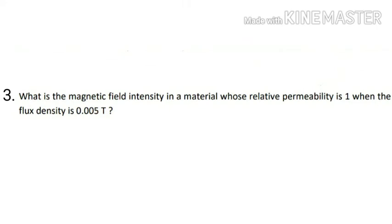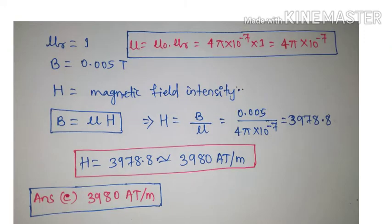Question number three: what is the magnetic field intensity in a material whose relative permeability is one, when the flux density is 0.005 tesla? The relative permeability is given as one, and the magnetic flux density is given as 0.005 tesla.